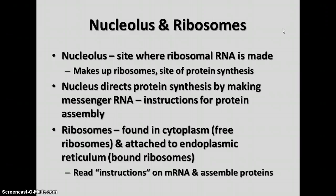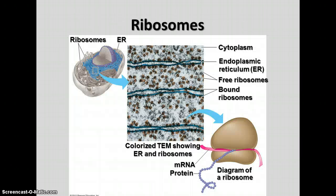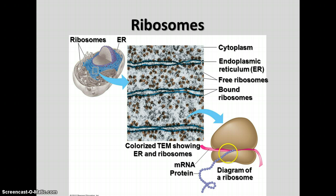The messenger RNA carries instructions that tell the ribosomes which order to put the amino acids in to make the coded protein. Ribosomes are found in the cytoplasm and attached to the endoplasmic reticulum. The ones in the cytoplasm are called free ribosomes; the ones attached to the ER are called bound ribosomes. The ribosomes read the instructions on the messenger RNA and use them to assemble the protein with the correct amino acid sequence. A diagram shows that a ribosome has two subunits, and the messenger RNA travels through the center while other molecules come in to build the protein.